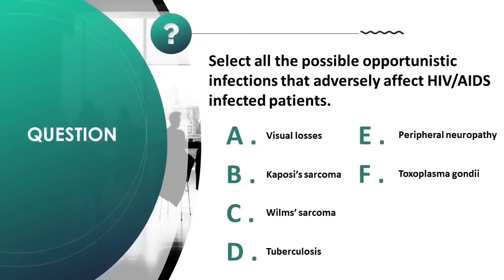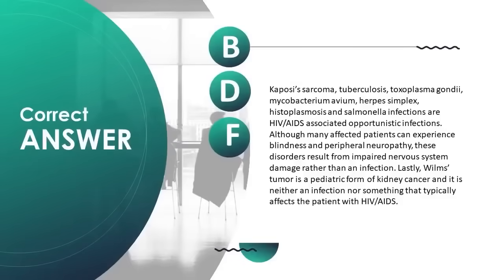Select all possible opportunistic infections that adversely affect HIV/AIDS patients: A) visual losses, B) Kaposi's sarcoma, C) Wilms's tumor, D) tuberculosis, E) peripheral neuropathy, F) Toxoplasma gondii. Correct answer is B, D, F. Kaposi's sarcoma, tuberculosis, Toxoplasma gondii, Mycobacterium avium, herpes simplex, histoplasmosis, and salmonella infections are HIV/AIDS-associated opportunistic infections.